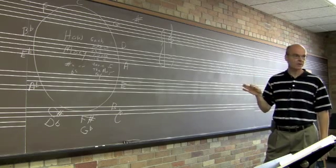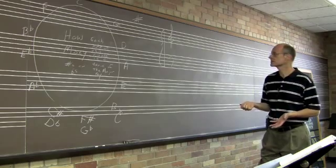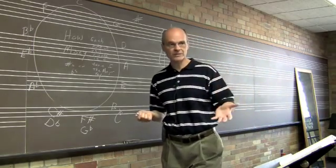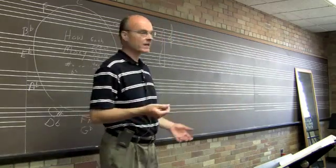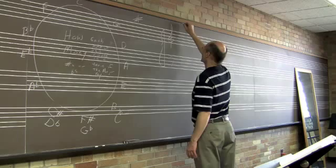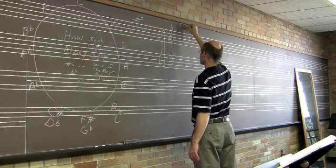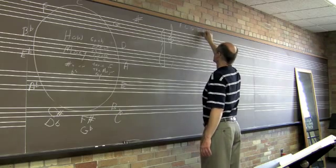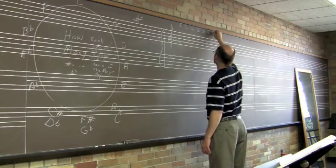The first thing you have to know in order to do the order of sharps - we'll do the order of sharps first - but the order of sharps and the order of flats is the order, that's what we have to know first. So the order is F C G D A E B.